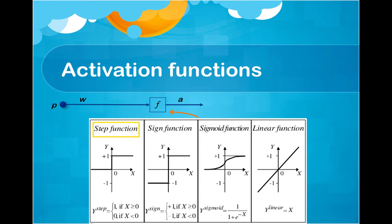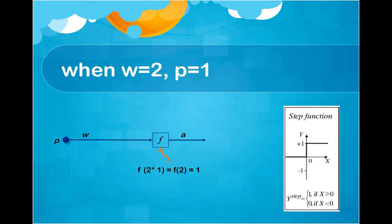Here is one example. In this example, I use step function. When W is 2 and P is 1, W multiplied by P becomes 2. This 2 goes to step function, which is our activation function. Since the threshold of step function is 0 and 2 is greater than 0, the step function returns 1.